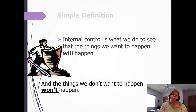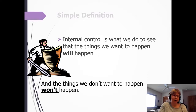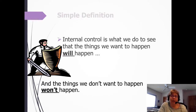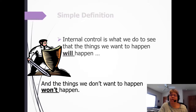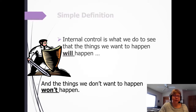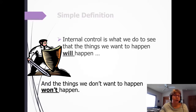If you're talking to a non-business person, internal control simply means making sure that the things we want to happen will happen. For example, a student wants to pass an exam — that doesn't just happen, so they study, review, re-read chapters, and work problems. And things we don't want to happen won't happen — we lock our doors when we leave, we put on our seat belt. We do internal control in our personal lives; it's just a much bigger deal within an organization.